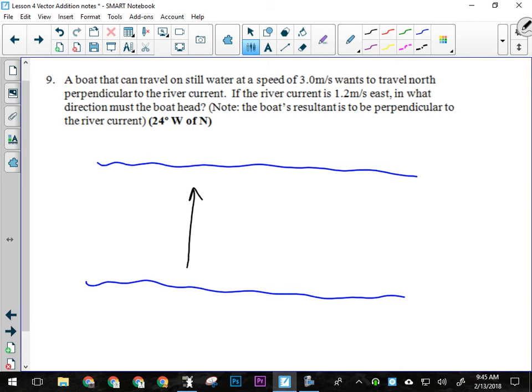The only way for me to end up going straight across the river is to turn an angle into the current a little bit. I want the current to push me back to straight across the river. If I just try and row straight across the river, I'm going to end up down here somewhere.